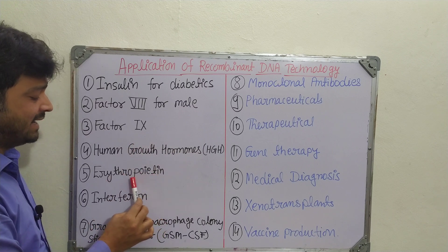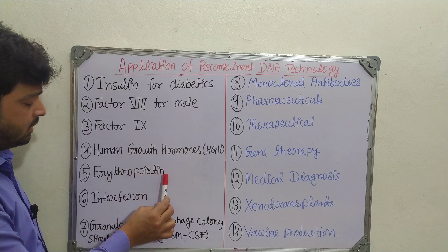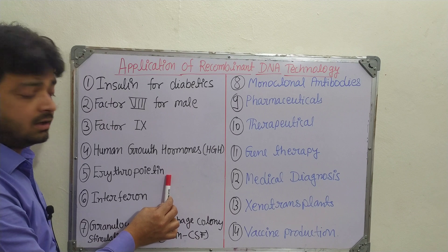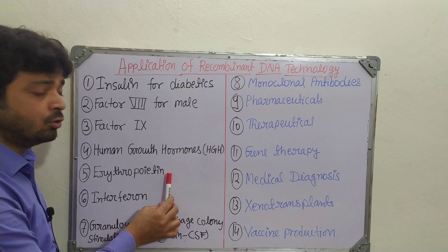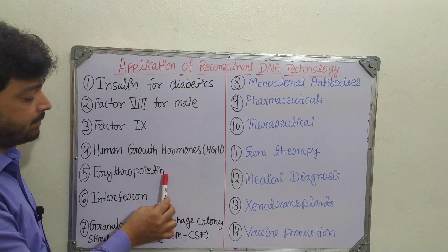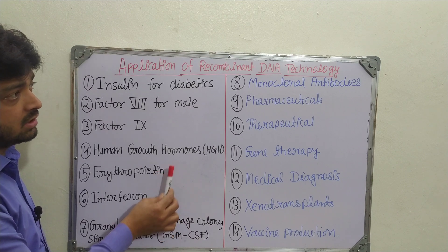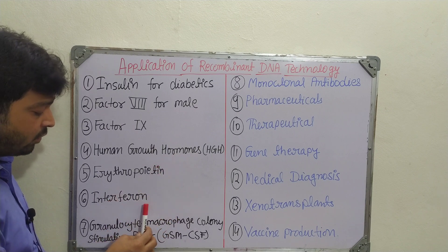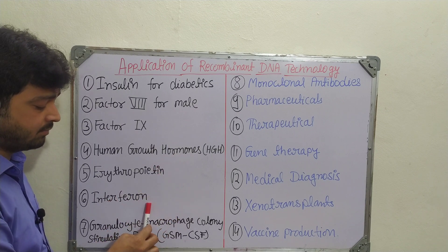The fifth application is erythropoietin, an enzyme that can initiate bone marrow for the production of RBCs. This can also be prepared using DNA technology.